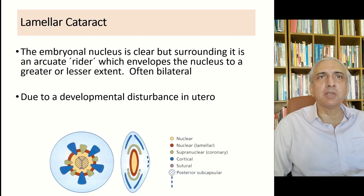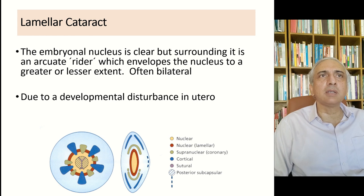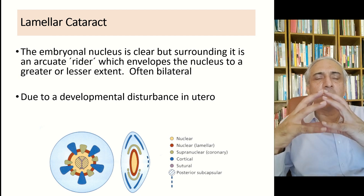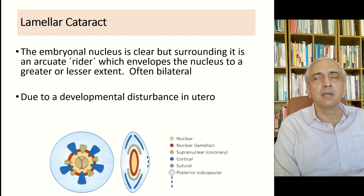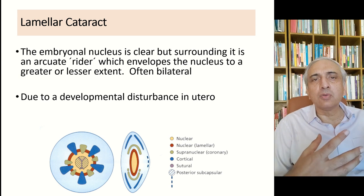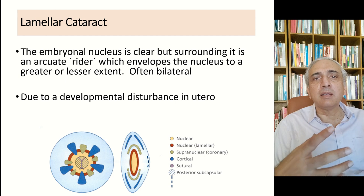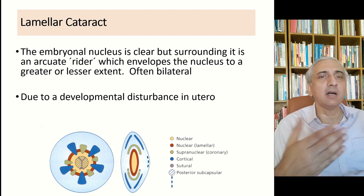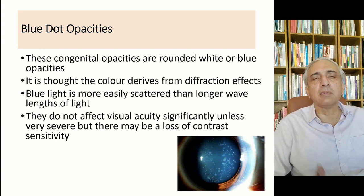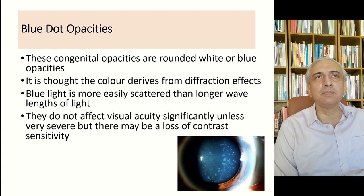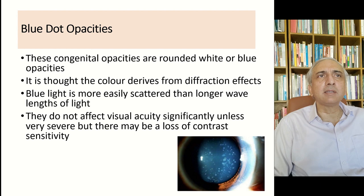Vacuolations or water clefts are changes seen in cortical cataracts — radially disposed, optically clear vesicles in the suture line. The earliest effect is separation of lens fiber ends within the suture. Lamellar cataract: the embryonic nucleus is clear, but surrounding it is an arcuate zone enveloping the nucleus — a circular or spherical opacity with clear lens matter both outside and inside. This occurs when the body experiences stress at an embryological stage, causing fibers to remain opaque, after which normal clear fibers resume.